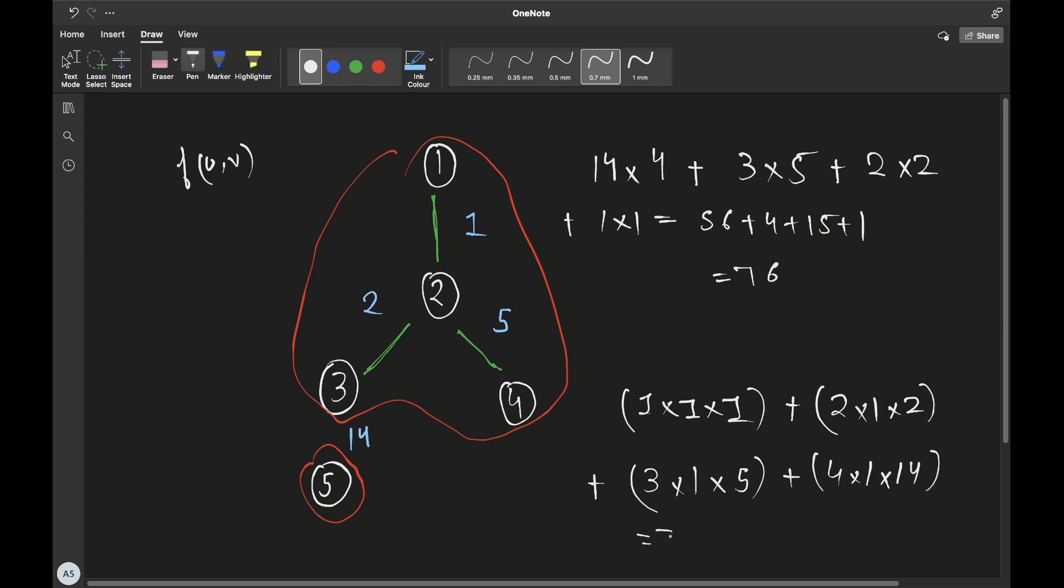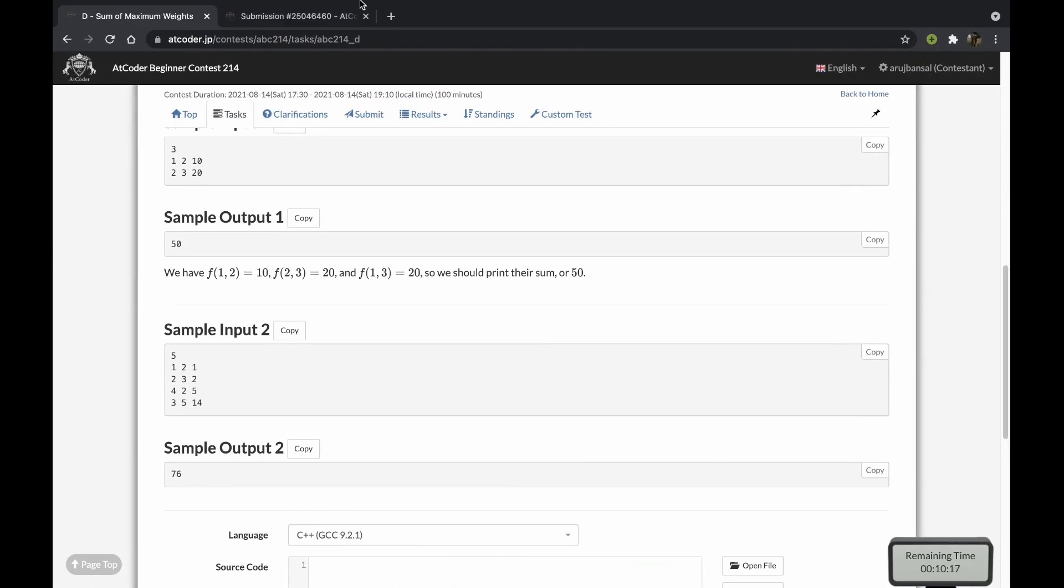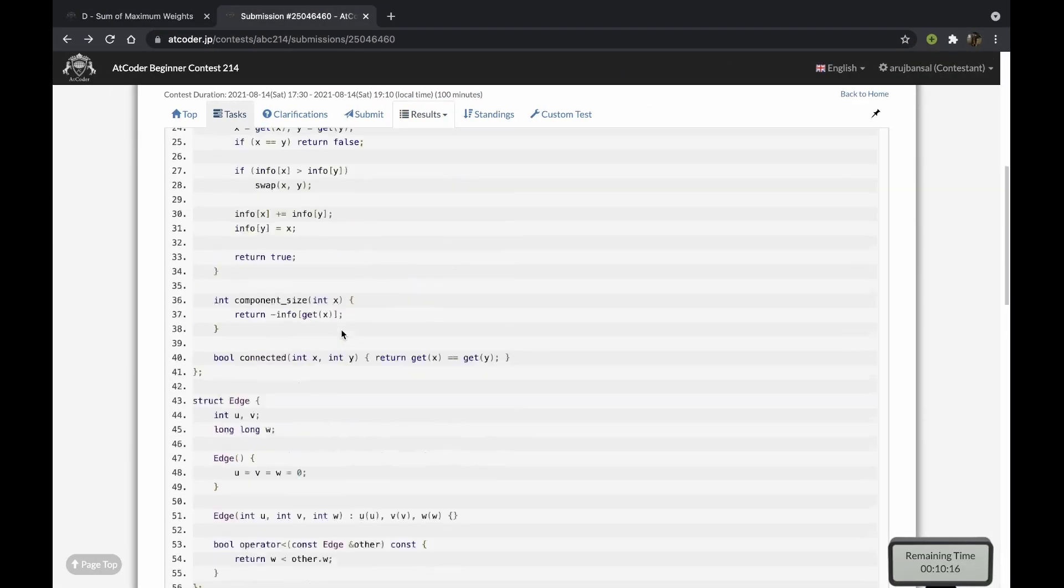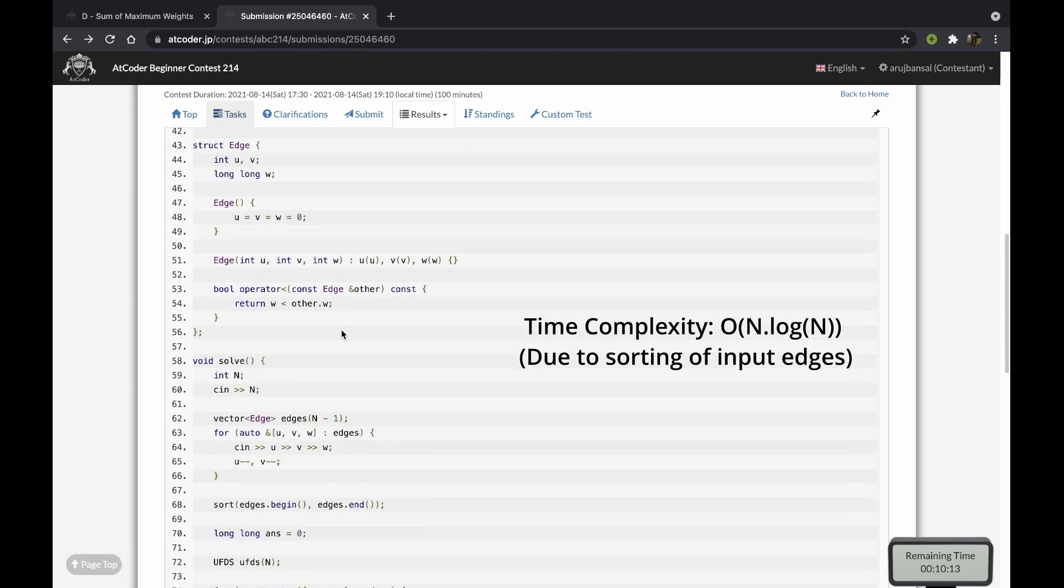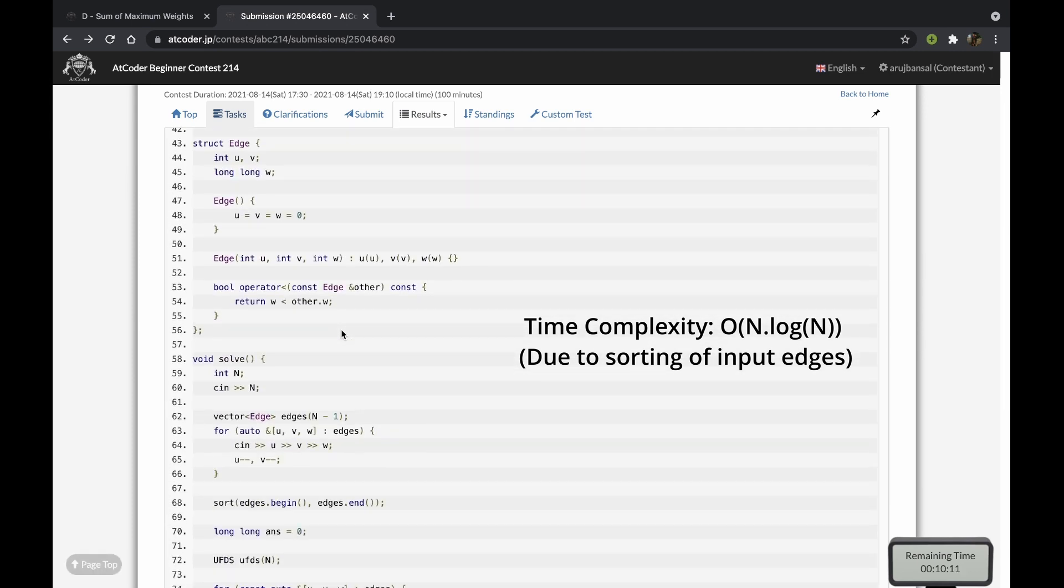Which if you sum up you will get 76, and the way to do this is to use union-find disjoint sets. So if you don't already know what it is I'll post a link to a tutorial in the description, but it basically allows us to keep information about the size of components and add edges, and then even update the information about the sizes of components.